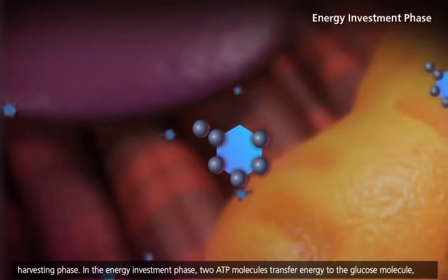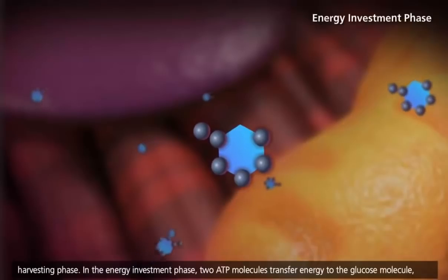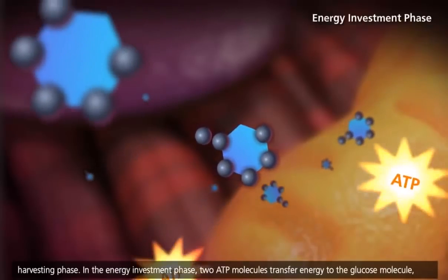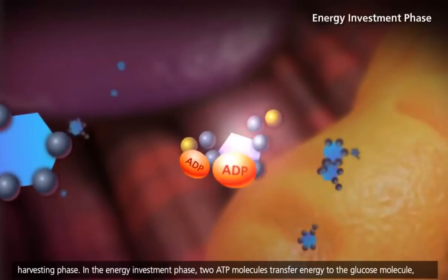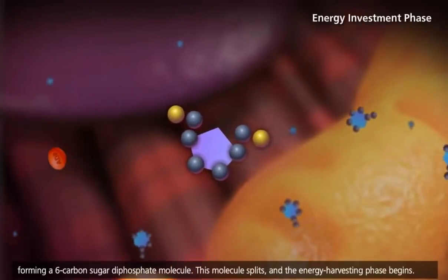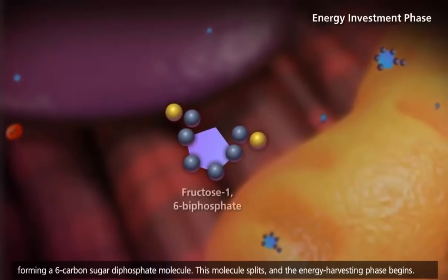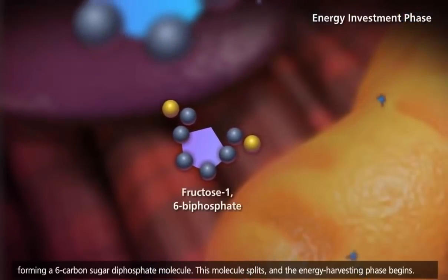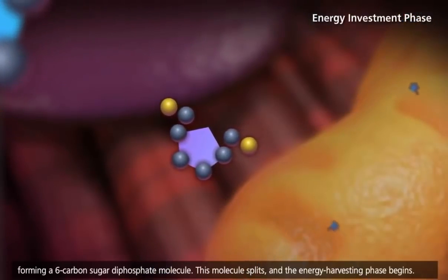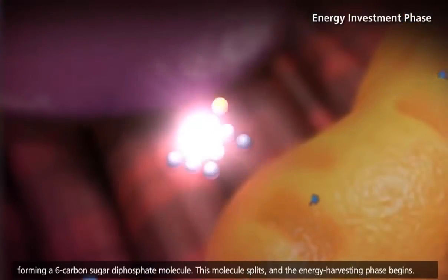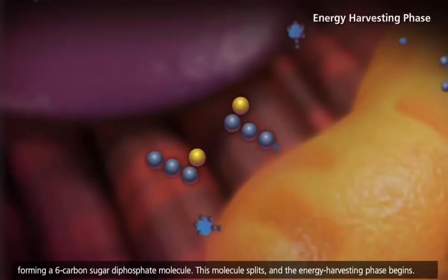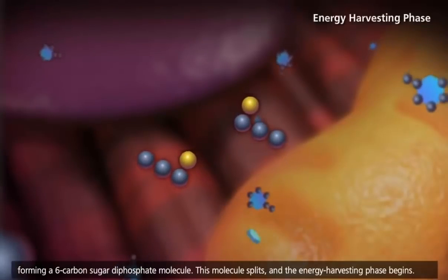In the energy investment phase, two ATP molecules transfer energy to the glucose molecule, forming a six-carbon sugar diphosphate molecule. This molecule splits, and the energy harvesting phase begins.